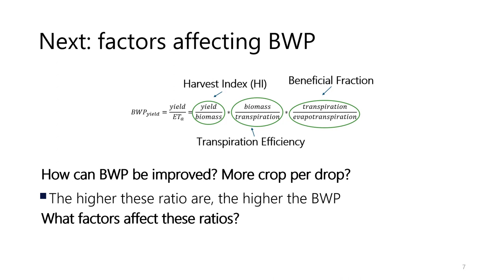Going back to the million-dollar question: can we increase these ratios to have higher water productivity? Well, it might not be as straightforward as it seems. These ratios are profoundly constrained by agronomic plant growth processes and are affected by management and environmental conditions in a complex way. These are aspects we will explore later on — so stay tuned!